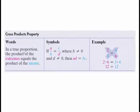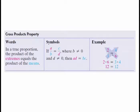The cross product property states: in a true proportion, the product of the extremes equals the product of the means. In symbols, if a/b = c/d (where b and d are not zero), then a times d equals b times c. So 2 to 3 equals 4 to 6 means 2 times 6 equals 3 times 4, or 12 equals 12.